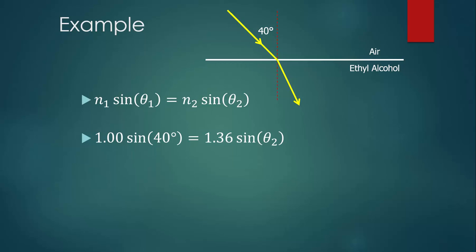The index of refraction of ethyl alcohol is 1.36, and the angle in ethyl alcohol is our unknown. We'll just leave it as theta 2.